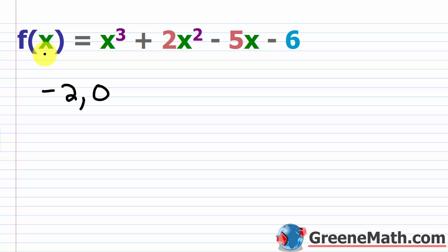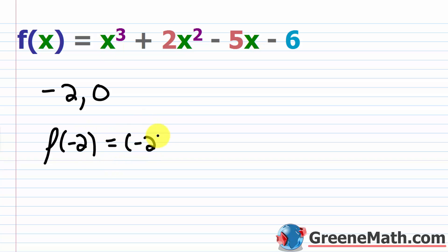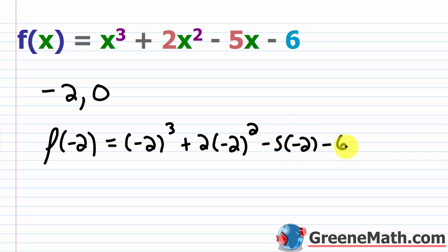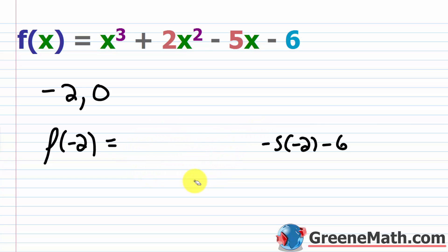To prove this, one of these function values is going to be negative and one's going to be positive. So f of negative 2 would be: negative 2 cubed plus 2 times negative 2 squared, minus 5 times negative 2, minus 6. Negative 2 cubed is negative 8. Negative 2 squared is 4, times 2 is 8. Negative 8 plus 8 is 0. Then negative 5 times negative 2 is 10. 10 minus 6 is 4. So this is positive 4.